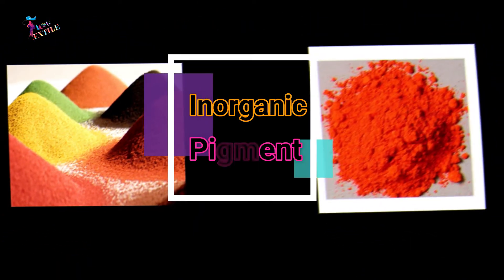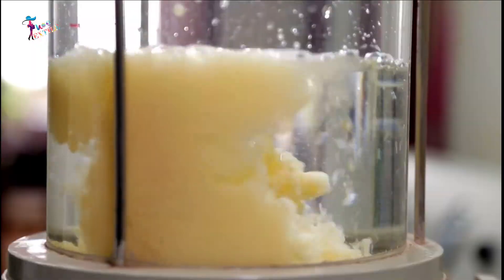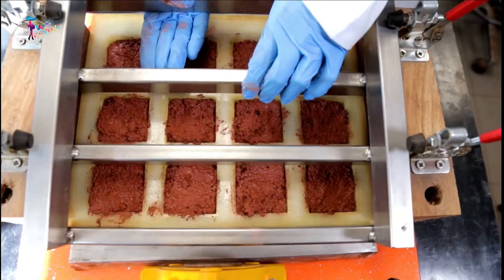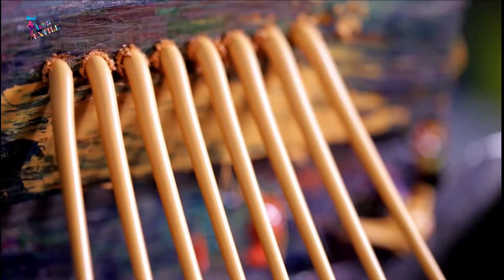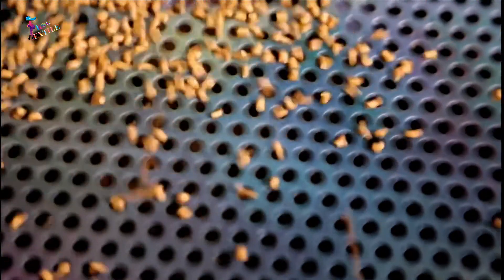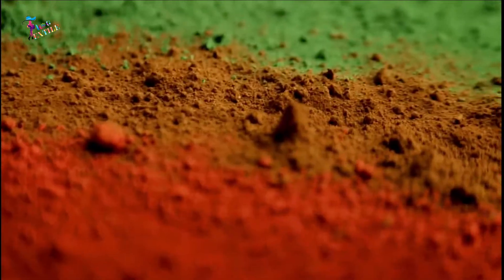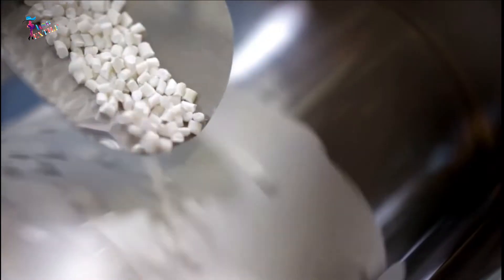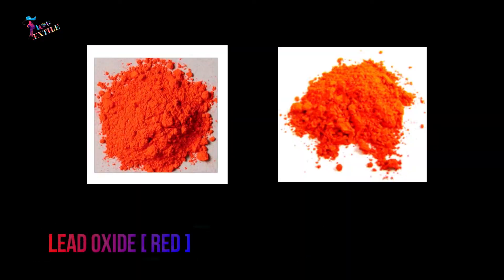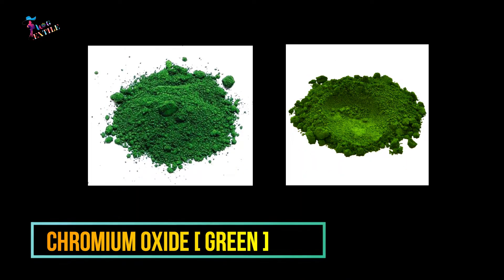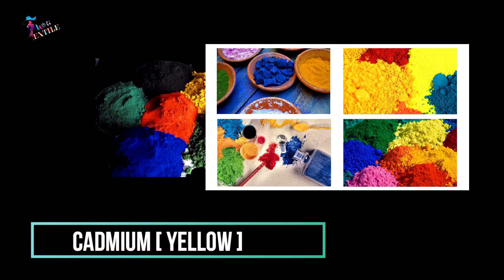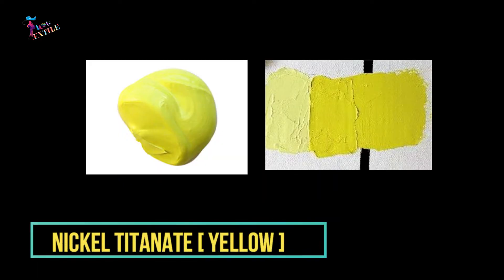Inorganic pigments do not contain carbon and typically refer to metallic oxides and synthetic pigments. They may be naturally occurring and can be processed by simply cleaning, pulverizing, and mixing. Popular inorganic pigments include lead oxide red, chromium oxide green, cadmium yellow, and nickel titanate yellow.